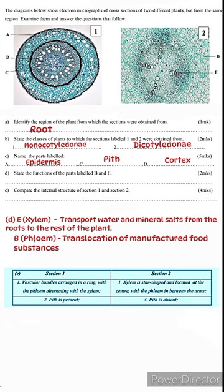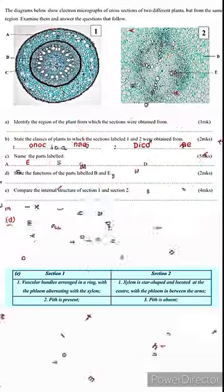There's another difference between the two, and that is the pith. In section 1, the pith is present. In section 2, there is no pith, so the pith is absent. That brings us to the end of our lesson today. I will see you next time.